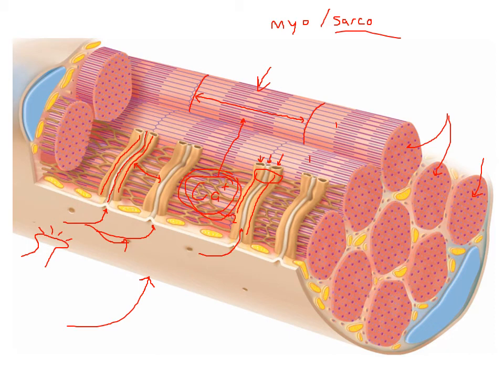As this electrical impulse goes in through the transverse tubule, it electrifies the sarcoplasmic reticulum, which drops the calcium, which produces a shortening of the sarcomere — and we will look at that in more detail in the lecture. So those are the parts of the cell membrane. A muscle cell is also called a muscle fiber. We have the sarcolemma — the outer membrane — and its extensions called transverse tubules. We have myofibrils with their individual sections called sarcomeres. And the sarcoplasmic reticulum wraps around each myofibril and holds calcium. As the electrical charge goes through the transverse tubule, it releases the calcium, which causes the sarcomere to shorten.